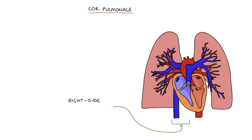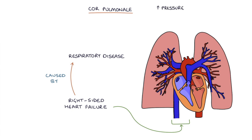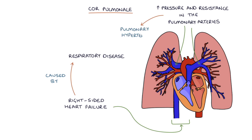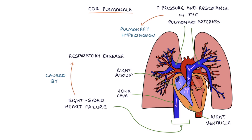Cor pulmonale is right-sided heart failure that's caused by respiratory disease. The increased pressure and resistance in the pulmonary arteries — we call this pulmonary hypertension — results in the right ventricle being unable to effectively pump blood into the pulmonary arteries. The right side of the heart is pumping against a lot of pressure, and this strain leads to a back pressure of blood into the right atrium, the vena cava and the systemic venous system.